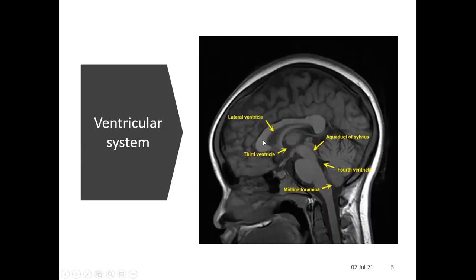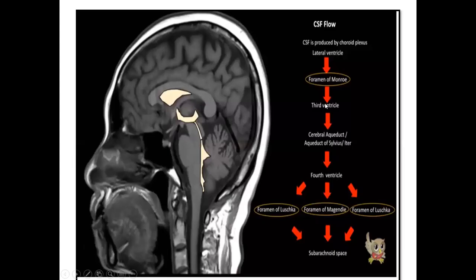In the ventricular system: this is the lateral ventricle, the third ventricle, the aqueduct of Sylvius, the fourth ventricle, and the midline foramen draining to the cisterna magna and subarachnoid space. CSF is produced by the choroid plexus of the lateral ventricles, flows through the foramen of Monro into the third ventricle, then through the cerebral aqueduct or aqueduct of Sylvius into the fourth ventricle, then through the foramina of Luschka (two lateral) and foramen of Magendie (central), collecting into the subarachnoid space.